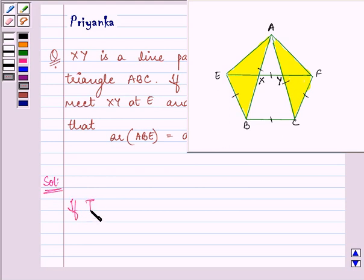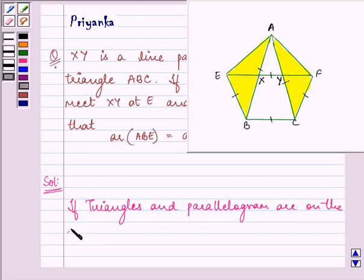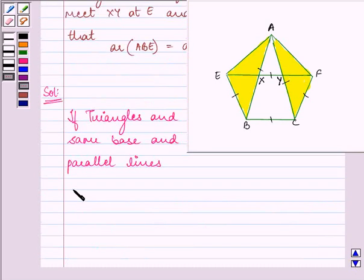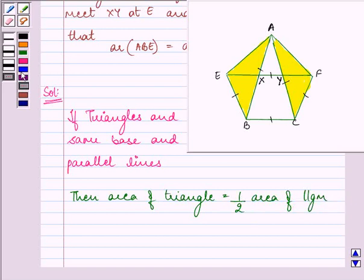We know that if triangles and parallelograms are on the same base and between the same parallel lines, then the area of the triangle is half the area of the parallelogram.